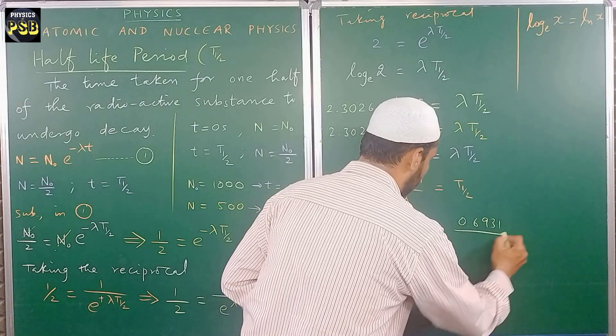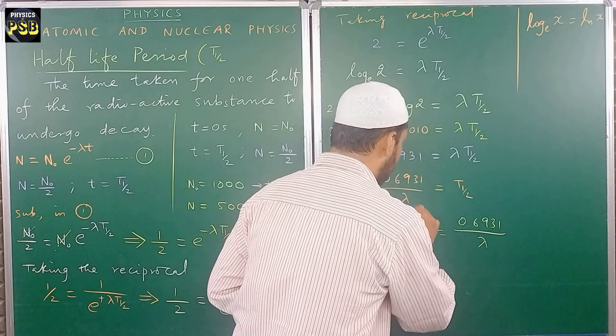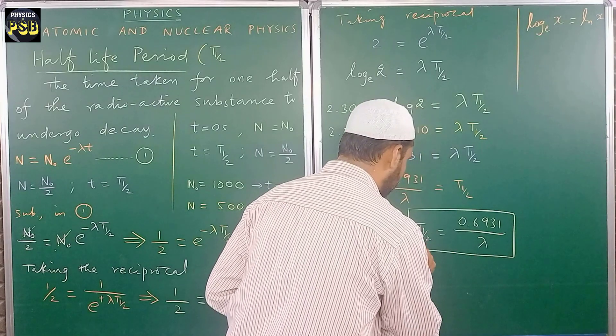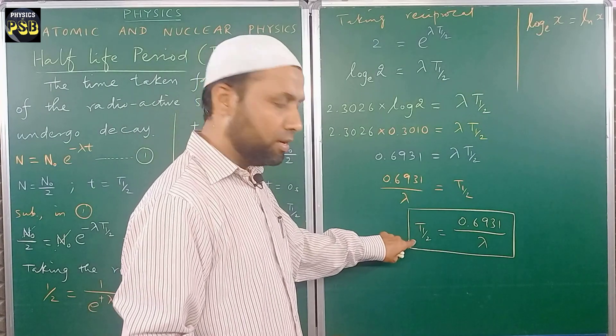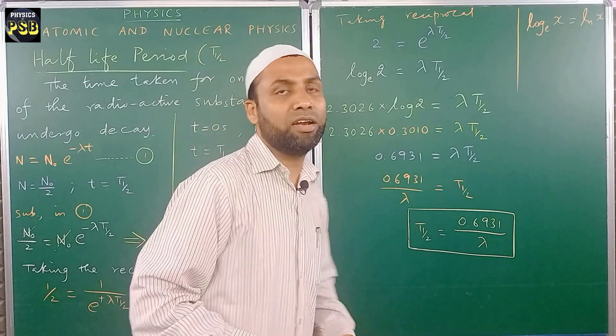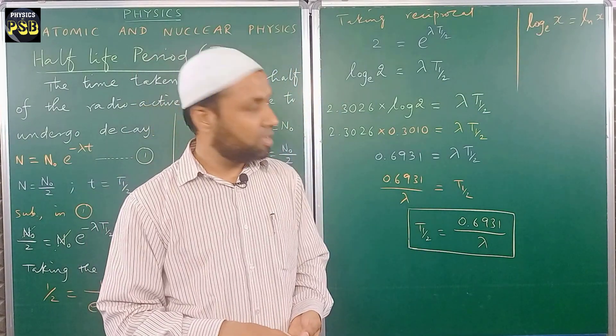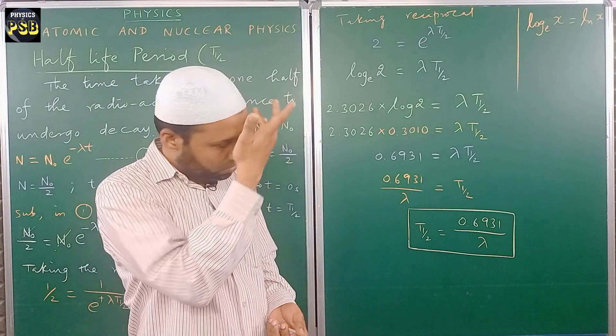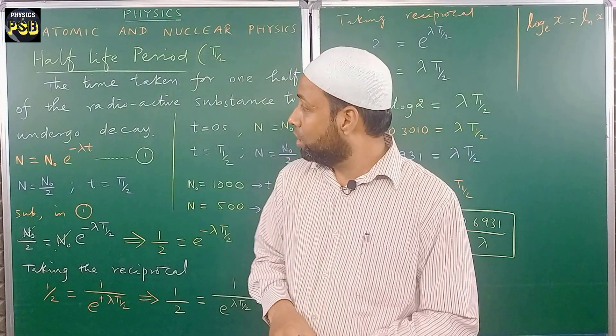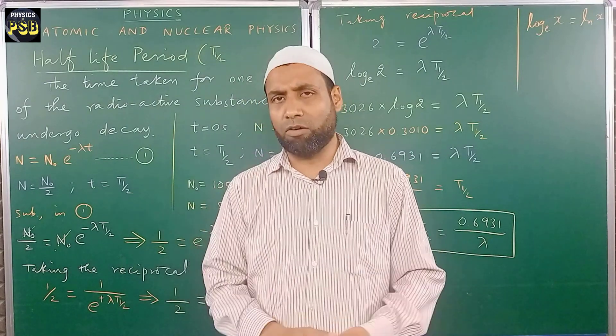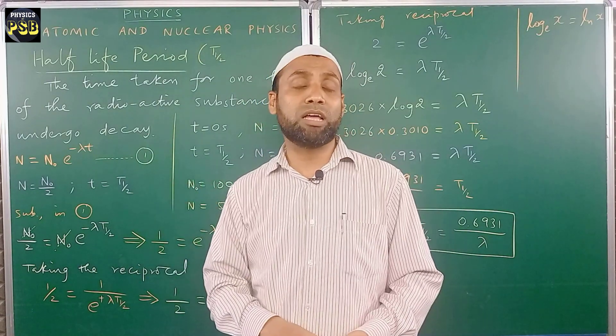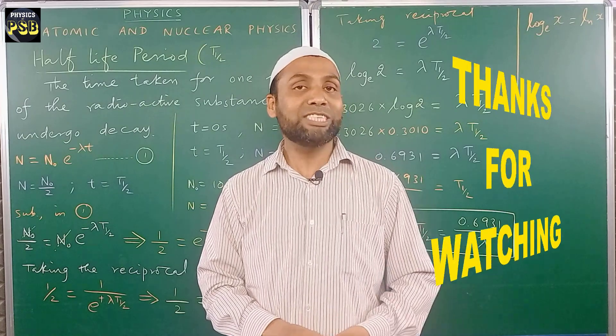Here lambda is nothing but the decay constant. So this is the final expression to get the half-life period of any given radioactive substance. Well, I hope that video is useful. If you have any kind of doubt related to the topic, you can put a question in the comment section. Thanks for watching.